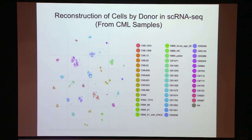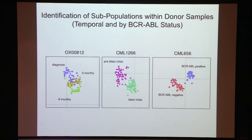We can also, using information at higher heteroplasmic frequencies, separate out different donors. For example, from a dataset of chronic myelogenous leukemia samples, we're able to perfectly separate out different donors using such approaches. Moreover, within these populations we can start to separate out temporally different samples at different time points, and separate out samples that are positive for disease-causing mutations from those that do not have the mutation present.